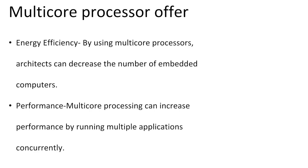Performance: multi-core processors increase performance by running multiple applications concurrently. Decreased distance between cores on an integrated chip enables shorter resource access latency and higher cache speeds compared to separate processors. However, performance gains depend on the number of cores, the level of real concurrency in the software, and the use of shared resources.